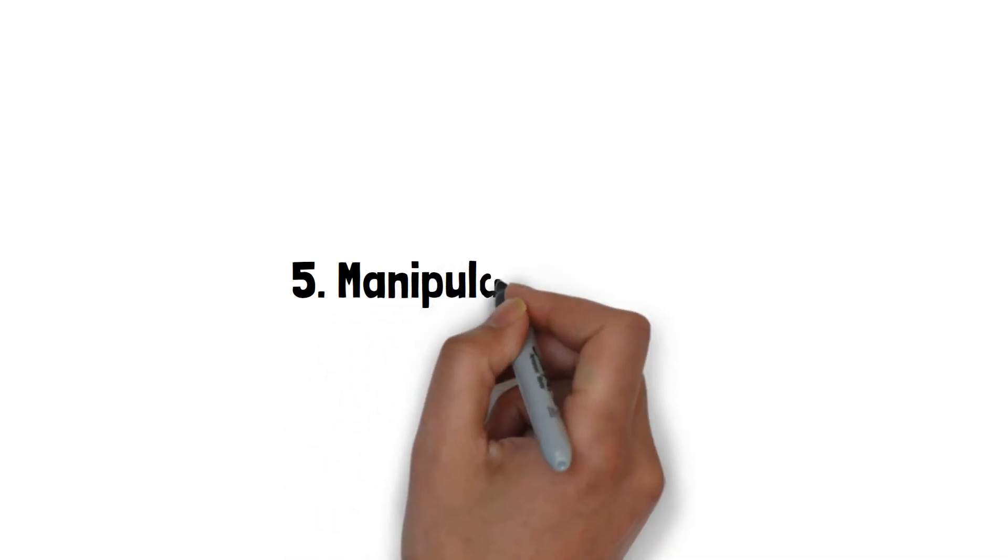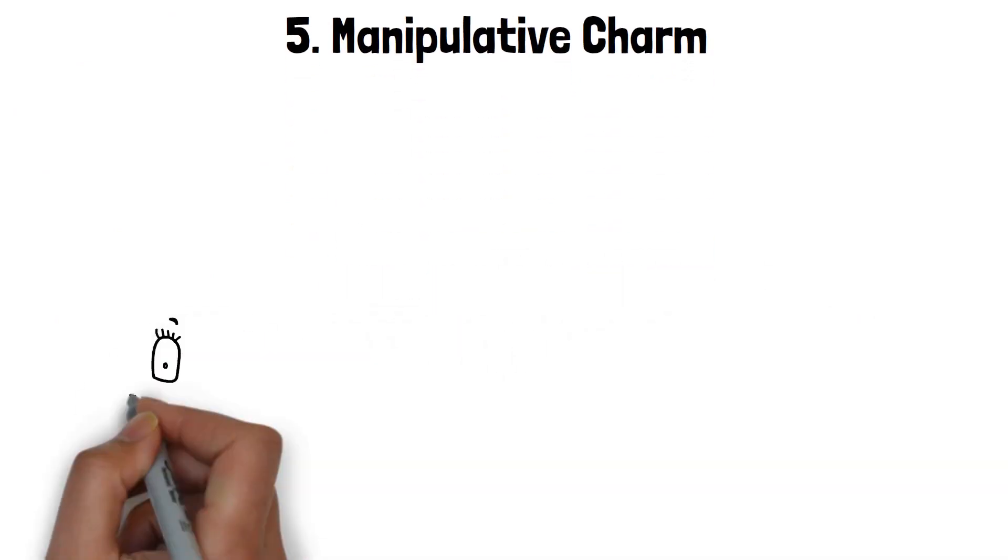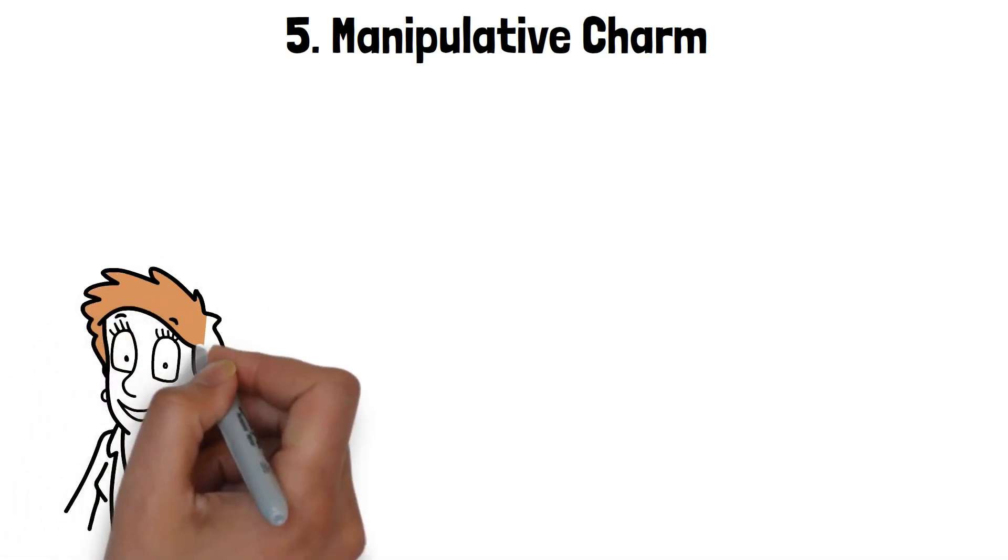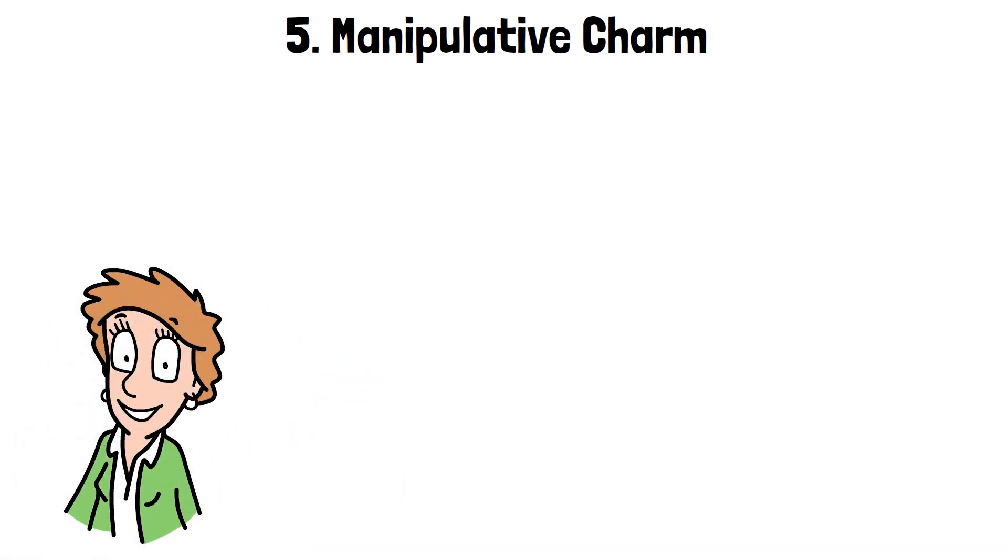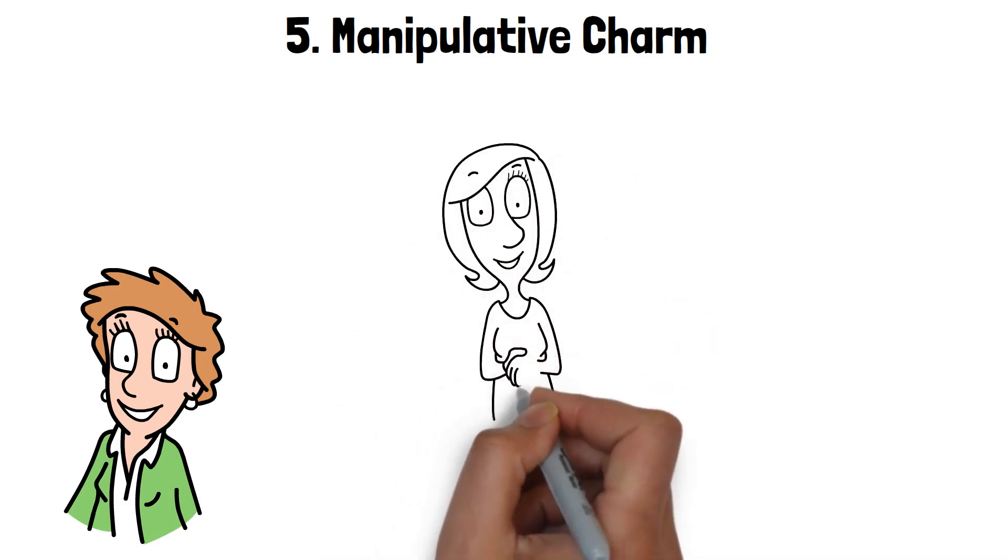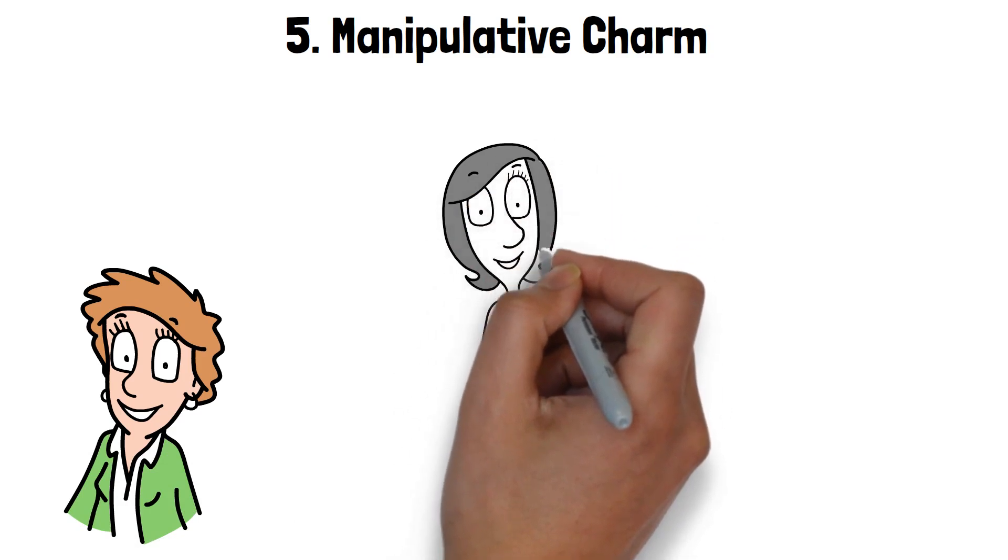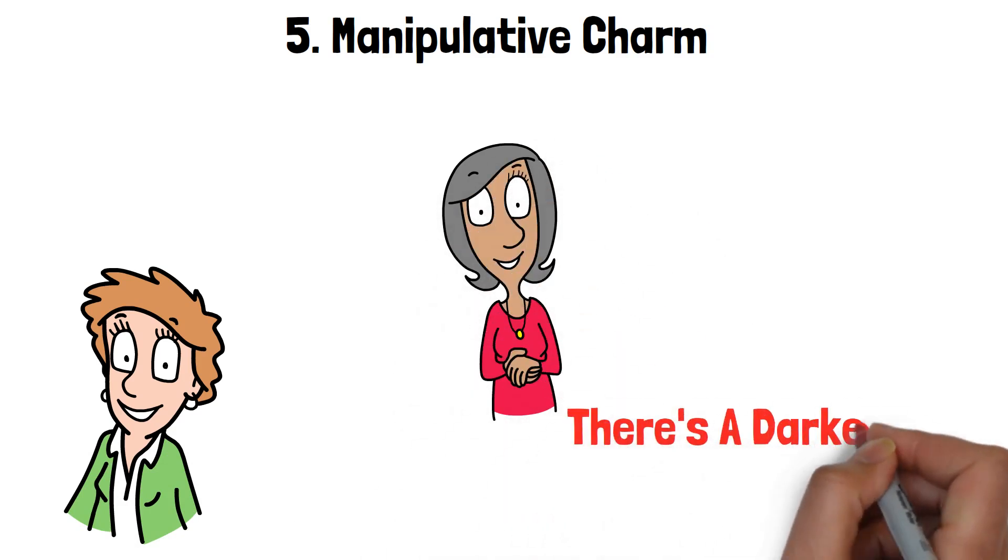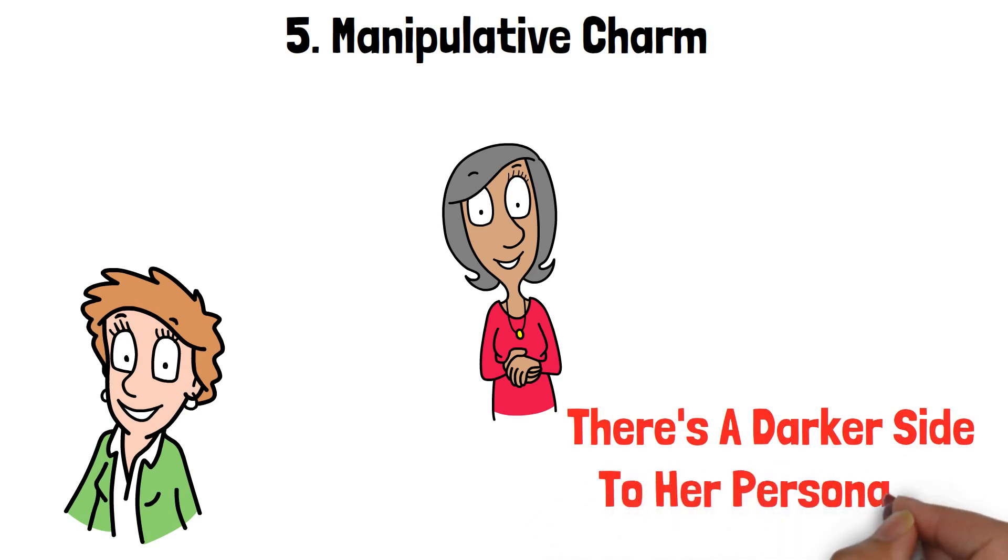5. Manipulative Charm. One of the perplexing aspects of dealing with a narcissistic wife is her ability to switch on the charm when it suits her agenda. In public or around others, she can be incredibly charismatic and engaging, making it difficult for those who haven't seen her behind closed doors to believe that there's a darker side to her personality.